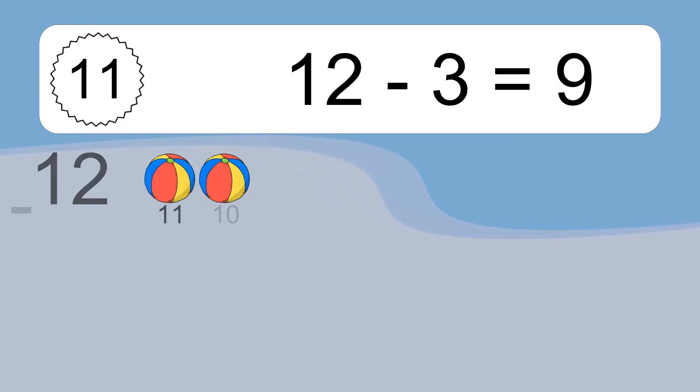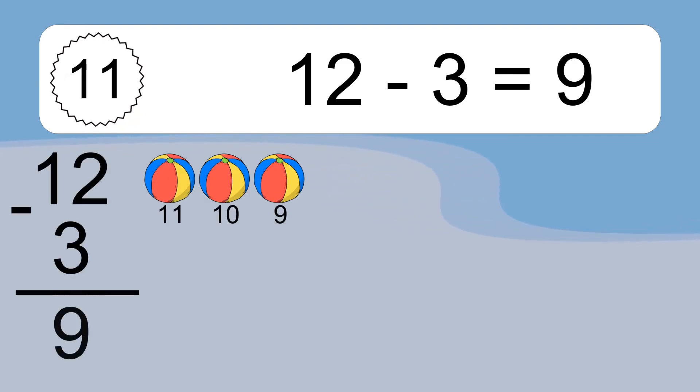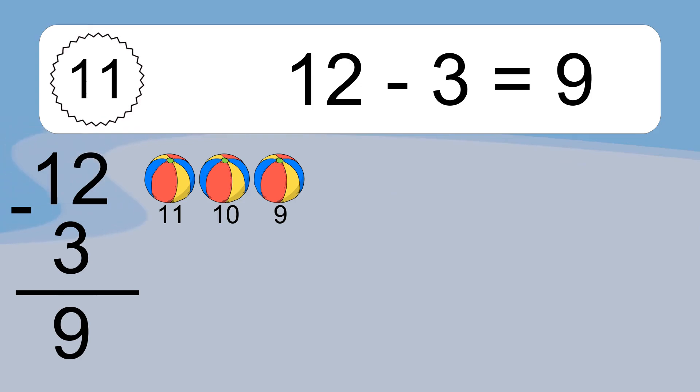12 minus 3 equals what? 12 minus 3 equals 9. Let's count it: 11, 10, 9.